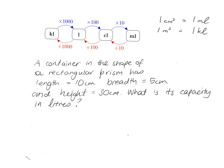Very often when dealing with volume, what we're really interested in is the capacity of a container — how much it can hold — and we usually want that in liters, milliliters, or kiloliters. So we need a way to move from volume in centimeters cubed or meters cubed to these capacity units. Two key facts: one centimeter cubed equals one milliliter, and one meter cubed equals one kiloliter.